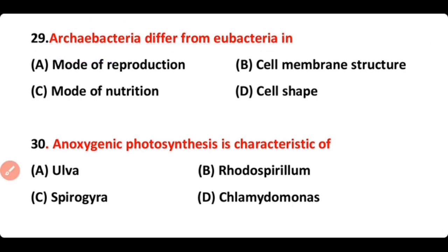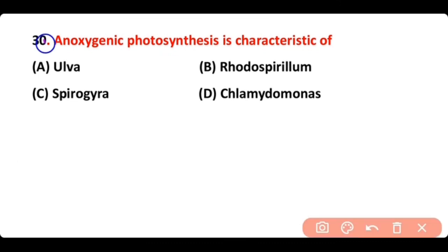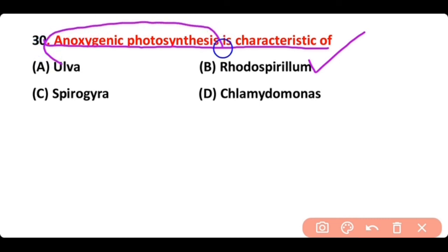Question 30. Anoxygenic photosynthesis is the characteristic of — Ulva, Rhodospirillum, Spirogyra, or Chlamydomonas? The correct answer is option B — Rhodospirillum performs anoxygenic photosynthesis.